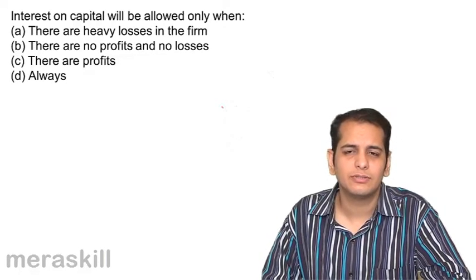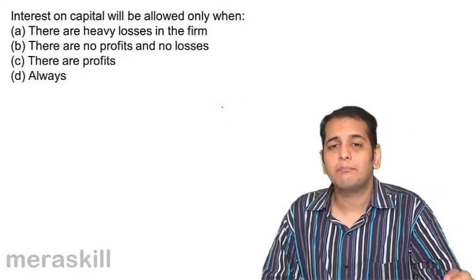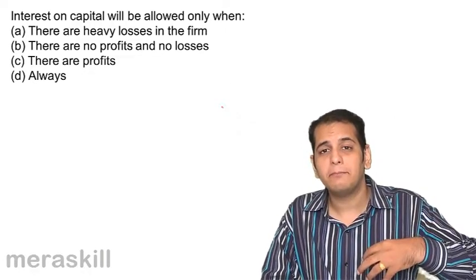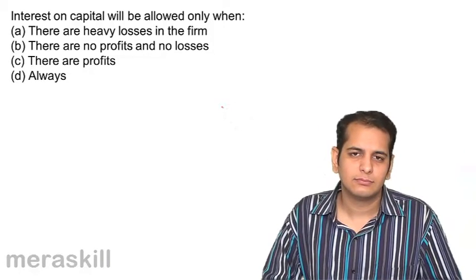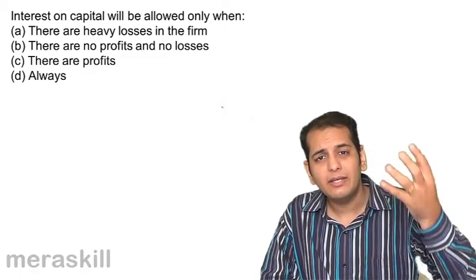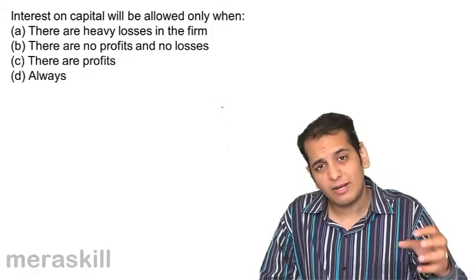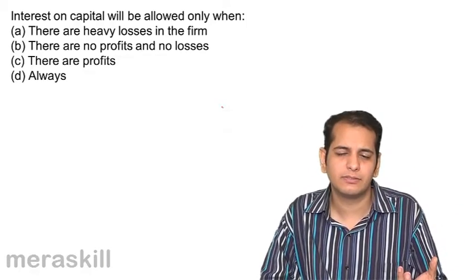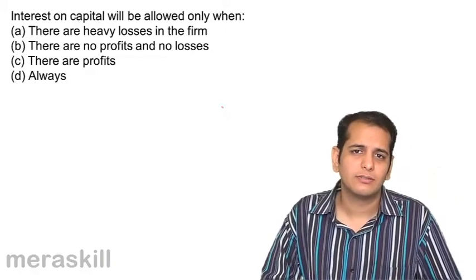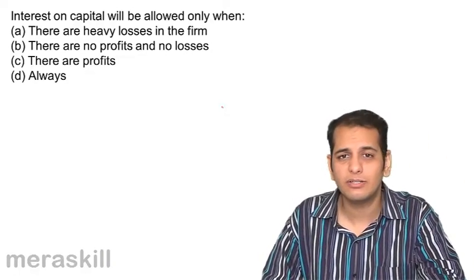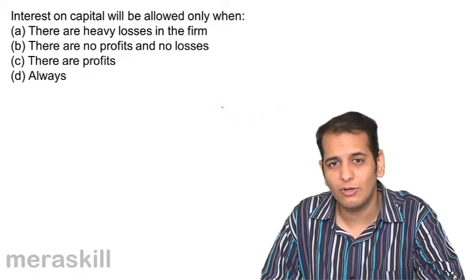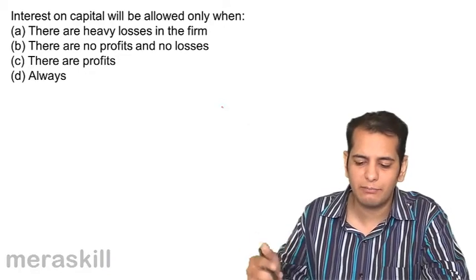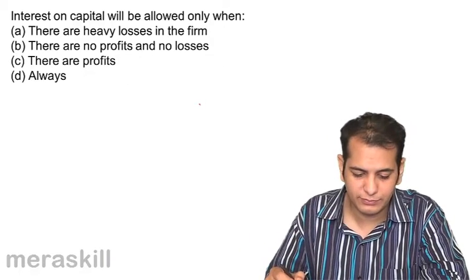By applying common sense, interest on capital is a payment to the partner over and above profits. There need to be profits first. Partners have a right to share profits, but profits must exist. When there are no profits or there are losses, you cannot pay interest to partners. So the condition to pay interest on capital is that there should be profits.